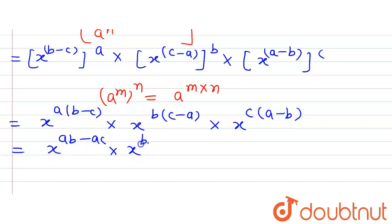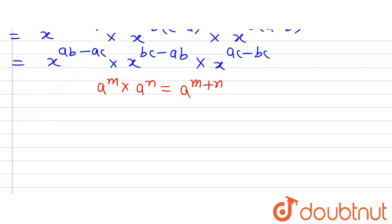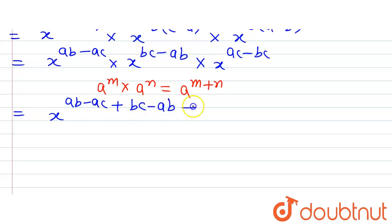Expanding the exponents: the first term gives x^(ab−ac), the second term gives x^(bc−ab), and the third term gives x^(ac−bc). Now, since the bases are the same, we know that a^m multiplied by a^n equals a^(m+n), so we add all the powers. We get x raised to the power (ab−ac + bc−ab + ac−bc).